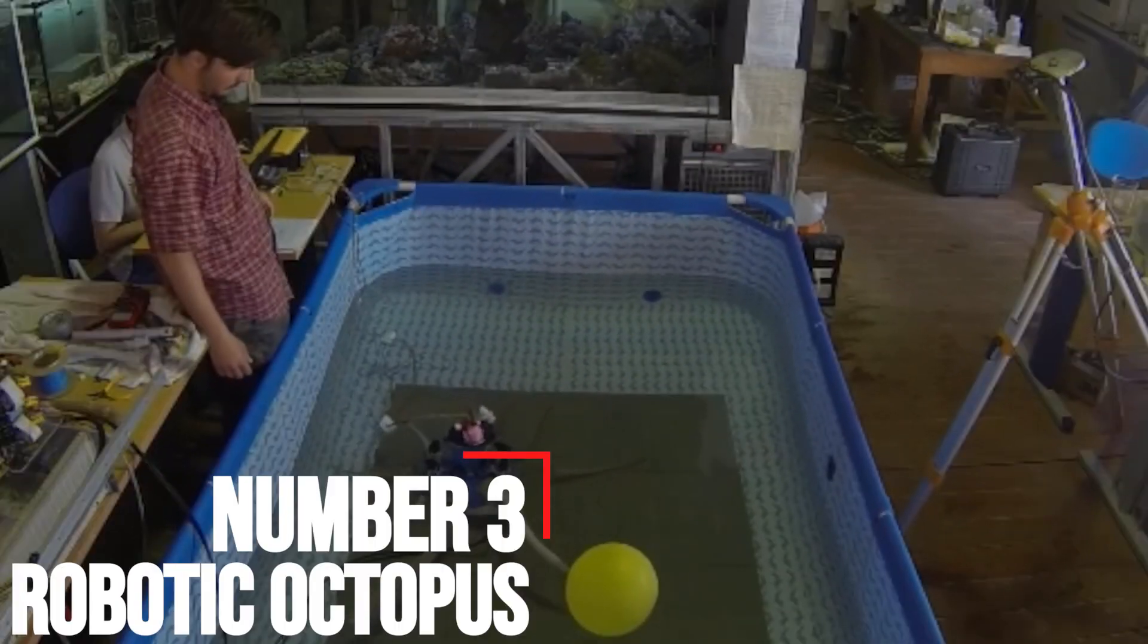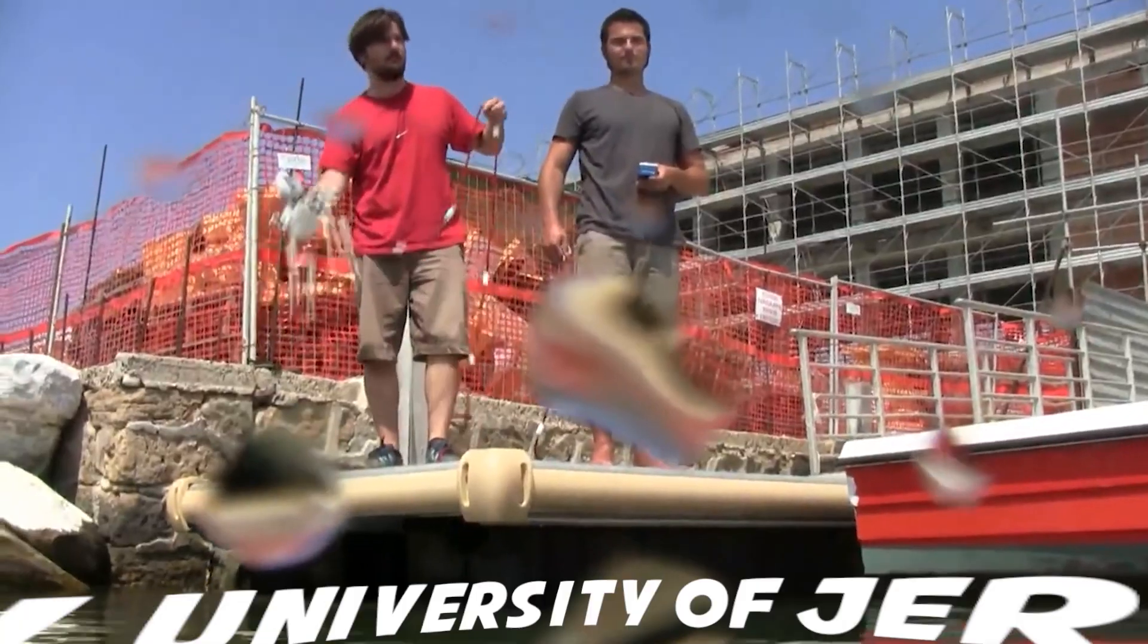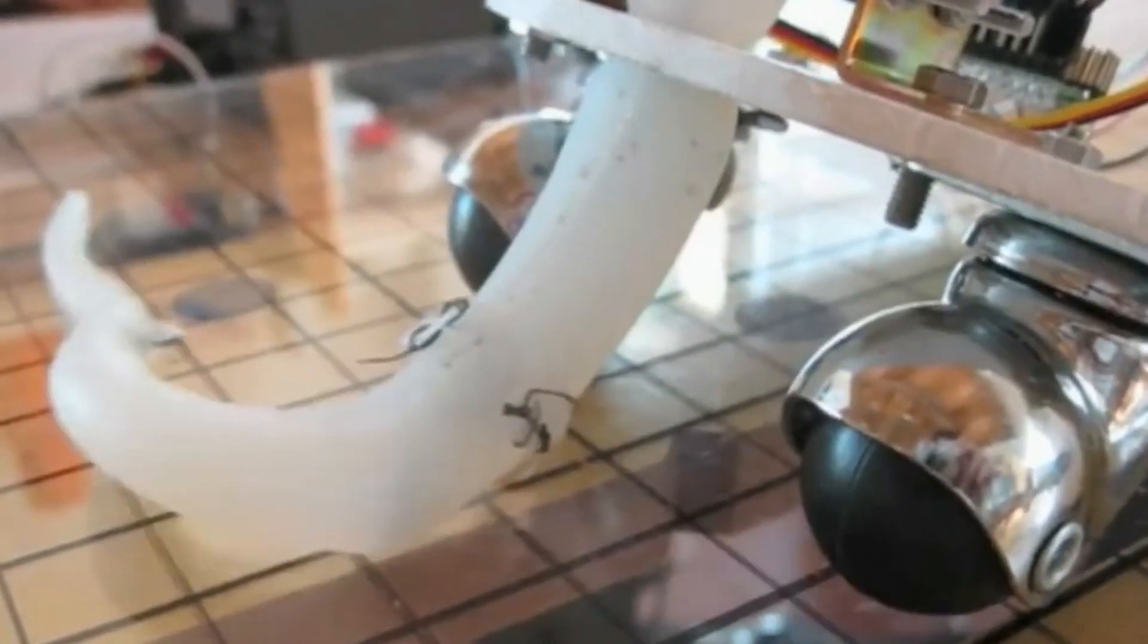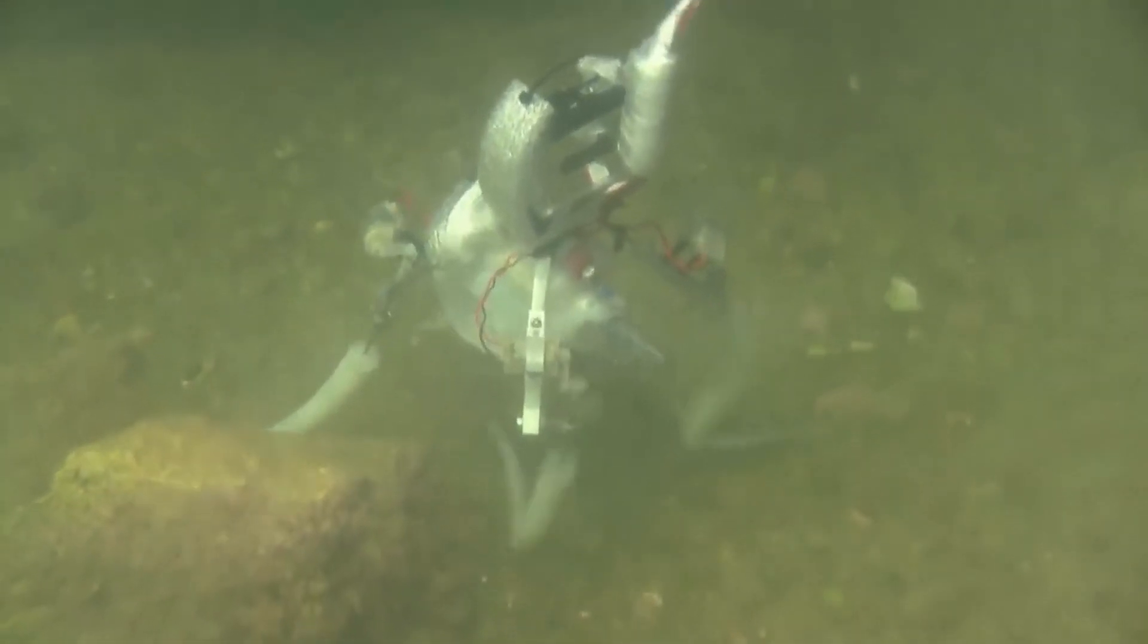Number three, robotic octopus. The octopus group at the Hebrew University of Jerusalem was set up to help create the first soft-bodied robot. Soft silicone rubber muscles mimic the way that an octopus moves its tentacles, elongating and stretching them as needed.